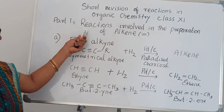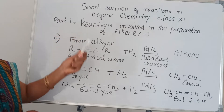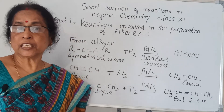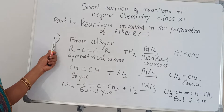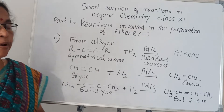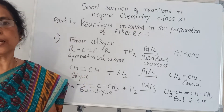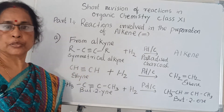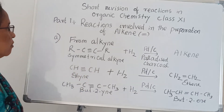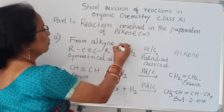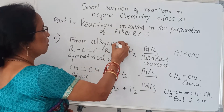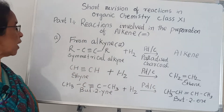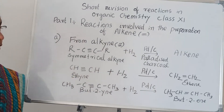In part 1 I am going to explain the preparation of alkene, and the first method is from alkyne. What is alkyne? Alkyne is also an unsaturated hydrocarbon where it contains a triple bond. Now how can you get alkene from alkyne?